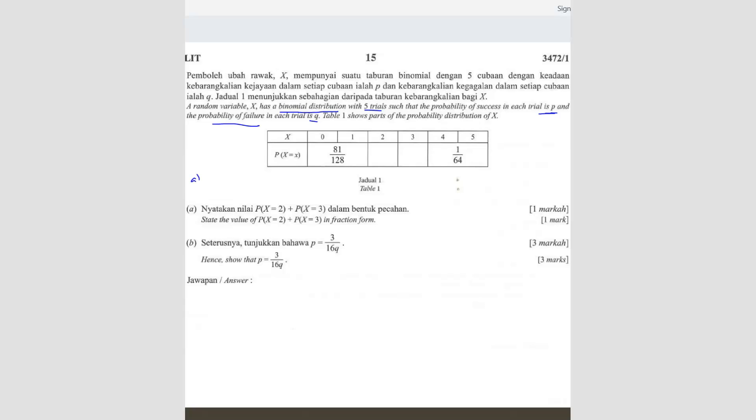So question A, you want to find P(X=2) plus P(X=3). You just have to take 1 minus 81 over 128 minus 1 over 64. So let me write here. Your answer should be 45 over 128. Pretty straightforward.